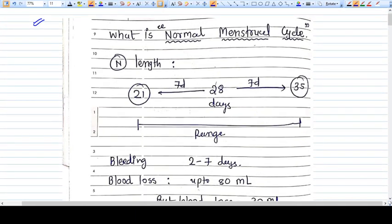So let's discuss what is a normal menstruation cycle first. The normal length of a menstruation cycle ranges from 21 days to 35 days.